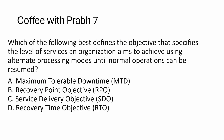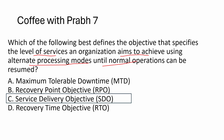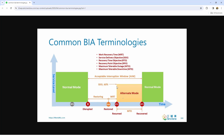Which of the following best defines the objective that specifies the level of service the organization aims to achieve using an alternate processing mode until normal operation can be resumed? MTD is maximum tolerable downtime — A is removed. RPO deals with data backup — B is removed. C is SDO, which talks about an acceptable level of services. D is the time it takes to restore services. The answer is C, SDO — it's the level of service an organization aims to achieve using an alternate processing mode. For example, running at 60% capacity with UPS while waiting for full power to return.